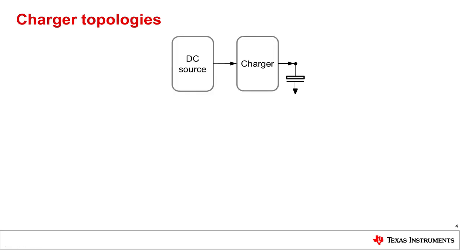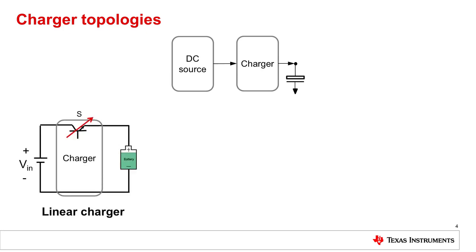Now let's highlight a few of the different charger topologies. At its core, a charger is simply a device which takes power from a DC input source and uses it to charge a battery. This can be achieved in a couple of different ways. First, we have the linear charger, which modulates the resistance of a pass device in order to regulate the charge current and voltage.